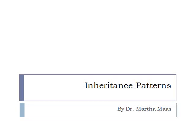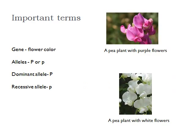This video will give a basic review of inheritance patterns. Some important terms you need to know are listed here. The first term is gene. A gene is a sequence of nucleotides found in DNA that code for a particular trait. I'm going to use pea plants as an example. There is a gene found in pea plants that codes for flower color.